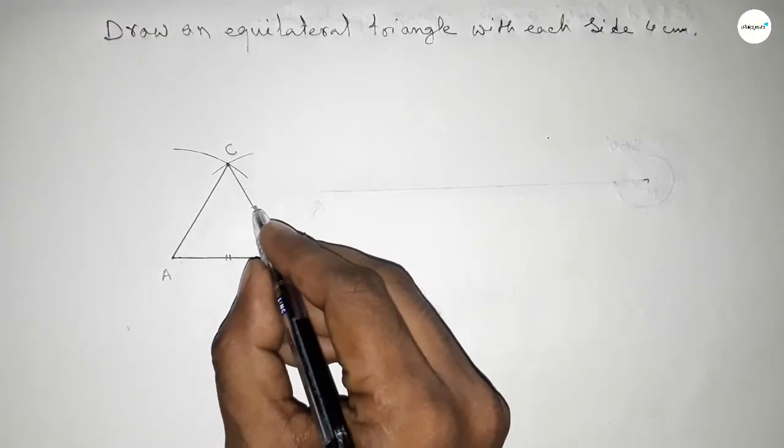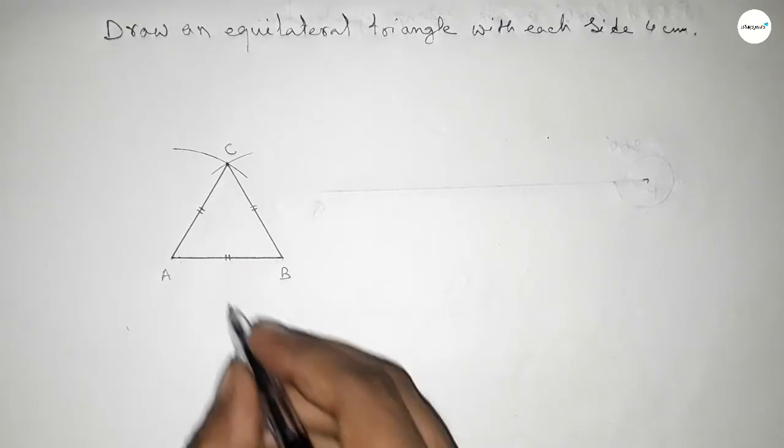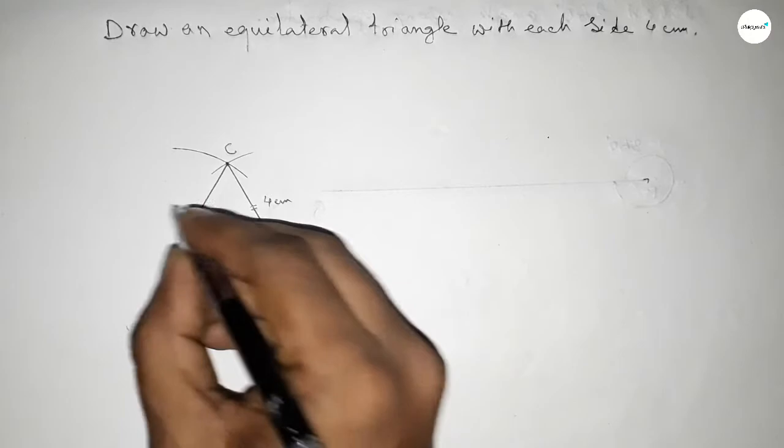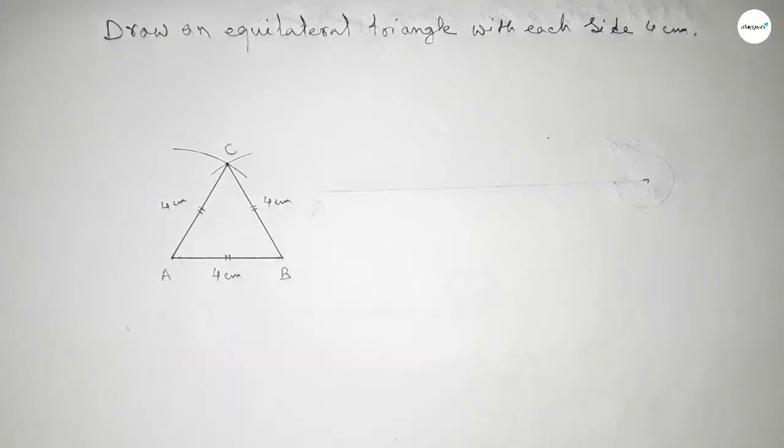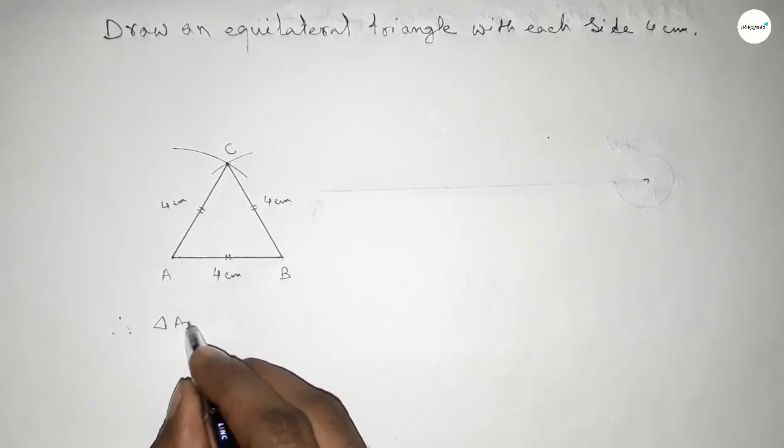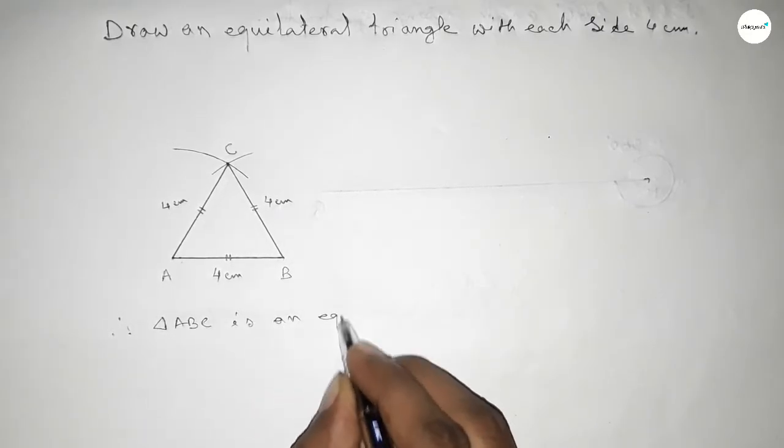This is 4 centimeters, this is 4 centimeters, and this is 4 centimeters. Therefore, triangle ABC is an equilateral triangle with each side 4 centimeters.